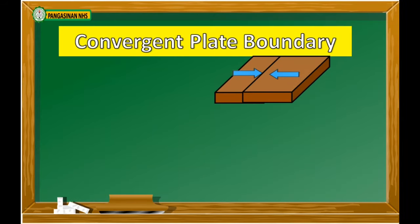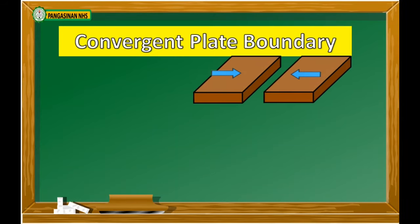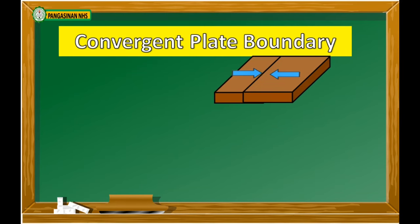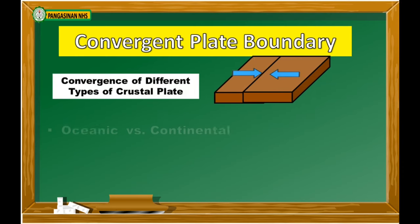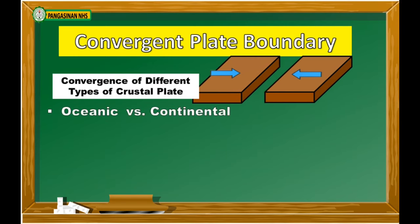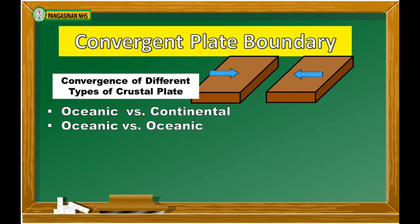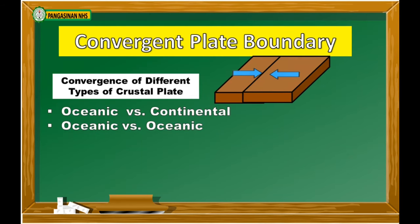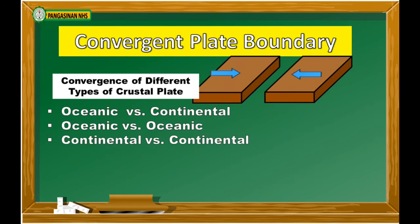Let's start with convergent plate boundary. The geologic processes that will be formed along this type of plate boundary depends on the material of plates that are colliding. We have the convergence of oceanic to continental plates, convergence of oceanic to oceanic plates, and convergence of continental to continental plates. Let's take a look at each type of convergent plate boundary.